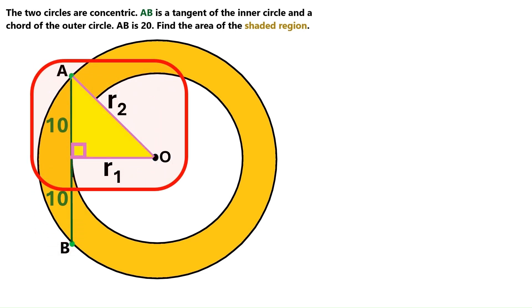We now have a right triangle over here. Its hypotenuse is R2. Its legs are R1 and 10. That means we can apply the Pythagorean theorem.